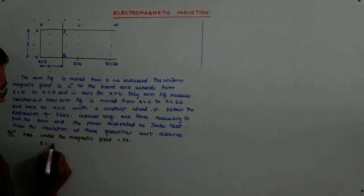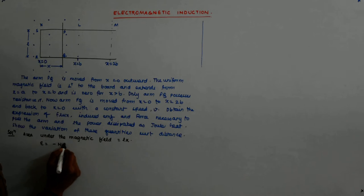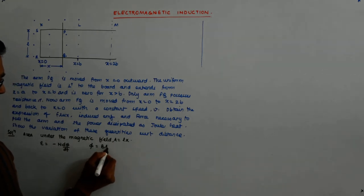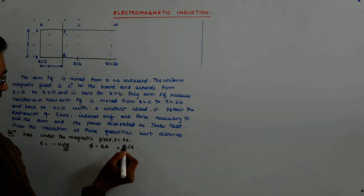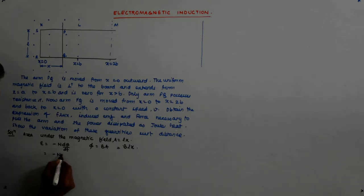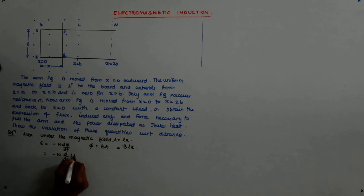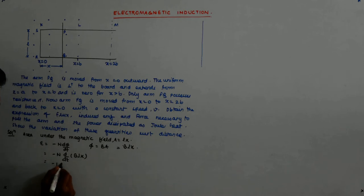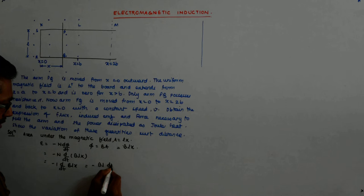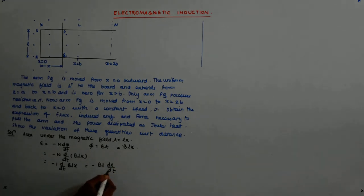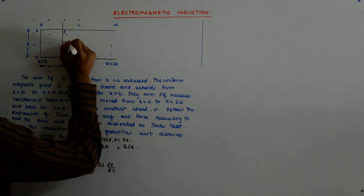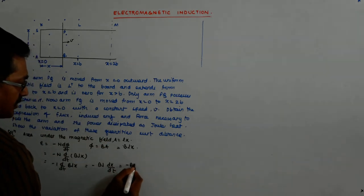E = -N dΦ/dt. What is Φ? Φ = B·A, and A = Lx. So I put this as -N d/dt(BLx). Since B is constant and L is constant, only A is variable. This gives -BL dx/dt, and dx/dt is V. So I get E = -BLV.